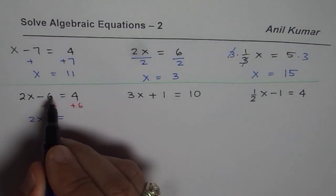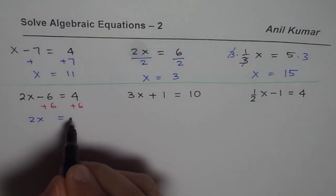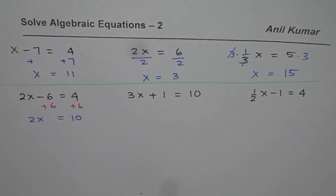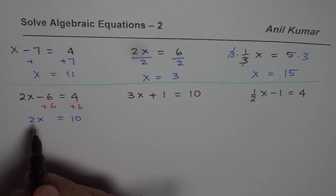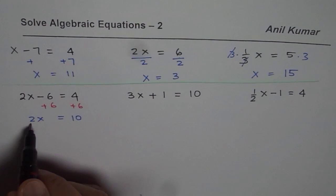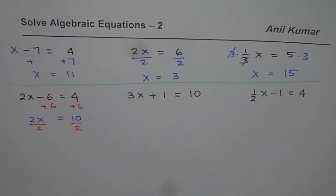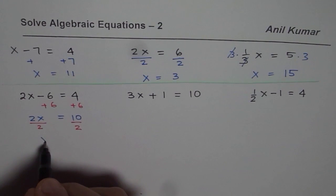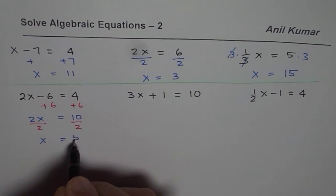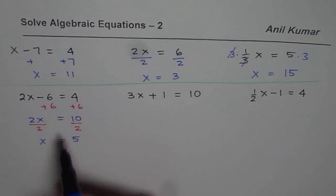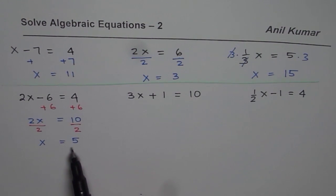equals to, minus 6 plus 6 is 0, 6 plus 4 is 10, and the next step I will divide by 2. When I divide by 2 I get my solution which is x equals 5. So we are involving two steps. That is what we will do in this particular exercise.